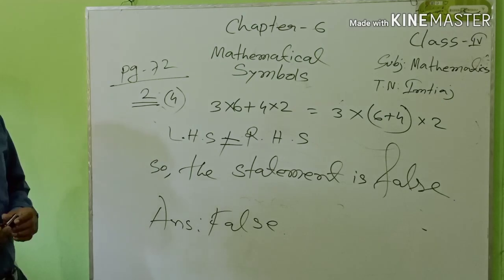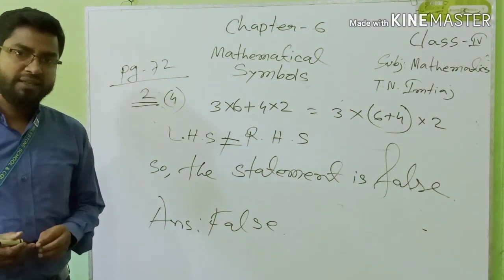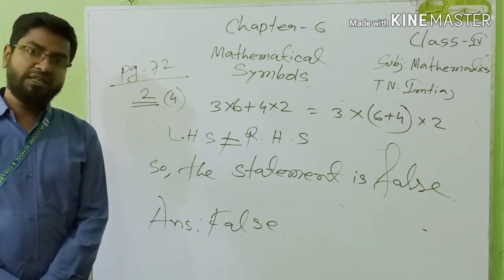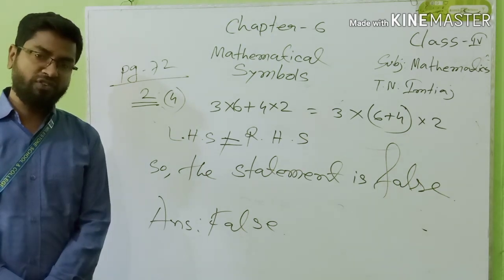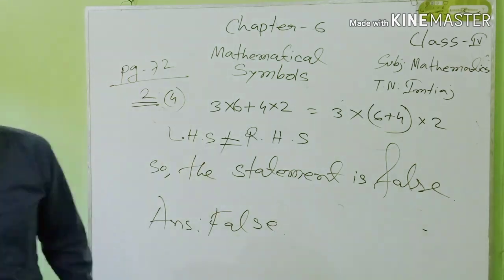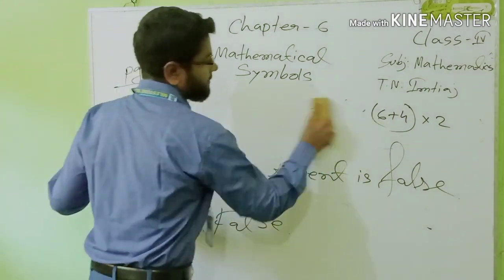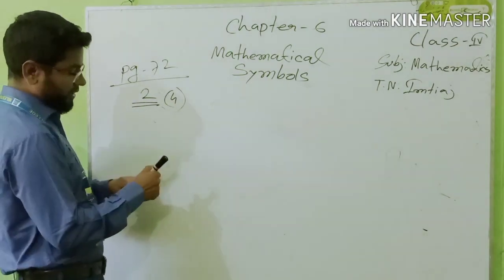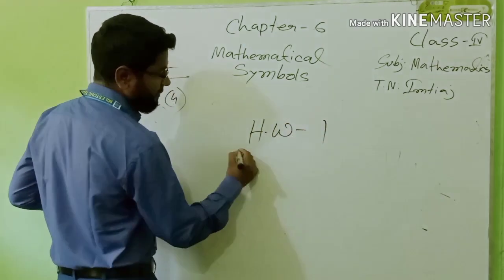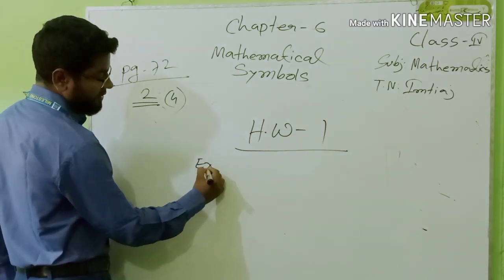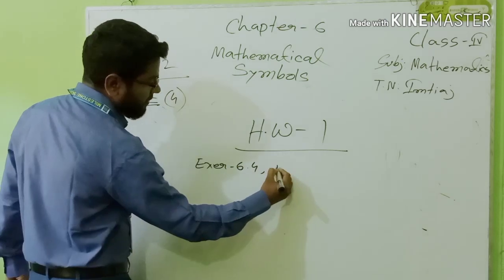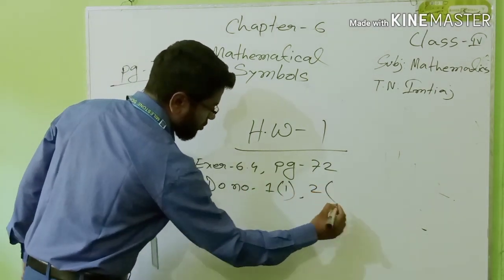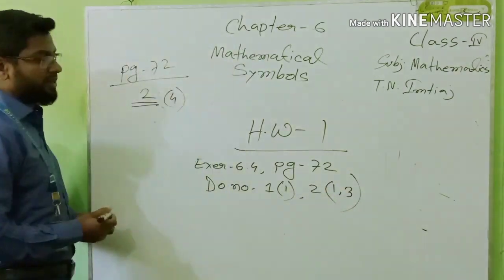Clear. Now I will give you homework. Write in your homework copy. Homework number 1: Exercise 6.4, page 72 — do number 1 and number 3. This is your homework.